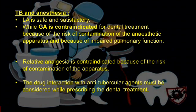TB and anesthesia: Local anesthesia is safe and satisfactory. General anesthesia is contraindicated for dental treatment because of the risk of contamination of the anesthetic apparatus and because of impaired pulmonary function. Relative analgesia is also contraindicated because of the risk of contamination of the apparatus. Drug interactions with antitubercular agents must be considered when prescribing dental treatment, since antitubercular drugs have serious adverse effects.